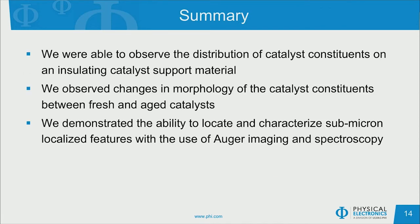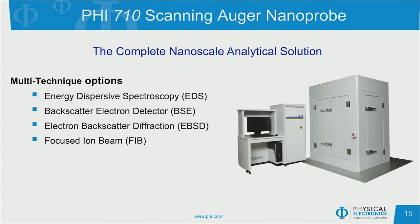In summary, we are able to observe the distribution of catalyst constituents on an insulating catalyst support material such as alumina. We observe changes in morphology of the catalyst constituents between the fresh and the aged catalyst, and we are able to demonstrate the ability to locate and characterize submicron features with the use of Auger imaging and spectroscopy. This work was performed on the PHI-710 scanning Auger nanoprobe, whose multiple technique options include energy dispersive spectroscopy, backscatter electron detection, electron backscatter diffraction, and a focused ion beam. Thank you for your attention.